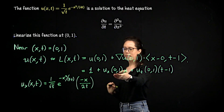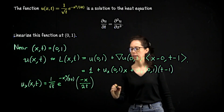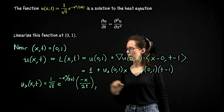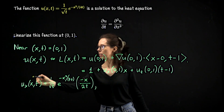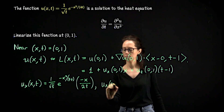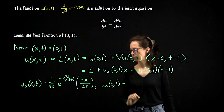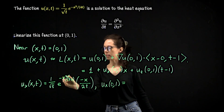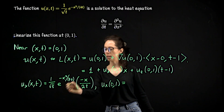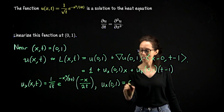Now let's evaluate u_x at the point (0, 1). The leading factor 1 over square root of t gives 1, the exponential e to the negative x squared over 4t gives e to the 0 which is 1, and then the factor negative x over 2t evaluated at x = 0 gives 0. So u_x at (0, 1) equals 0.